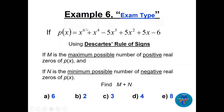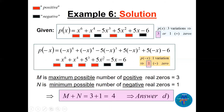Exam-type question: given a degree-6 polynomial, use Descartes' rule to find M (maximum possible number of positive zeros) and N (minimum possible number of negative zeros), then find M + N. Counting sign variations in f(x): three changes, so M = 3. For f(−x): one change, so N = 1. Therefore M + N = 3 + 1 = 4. The answer is D.